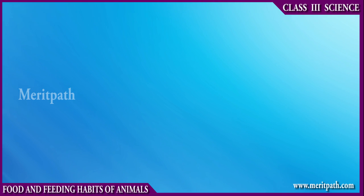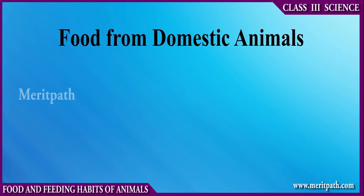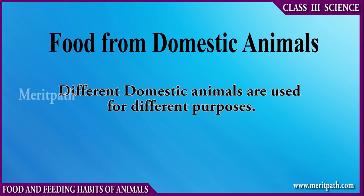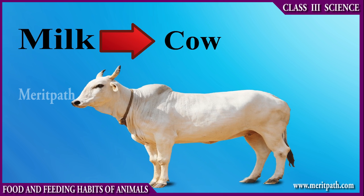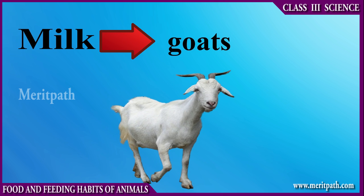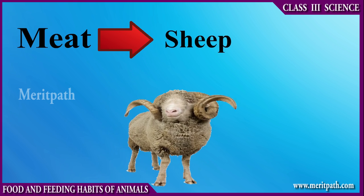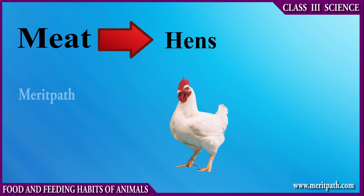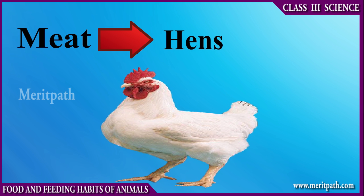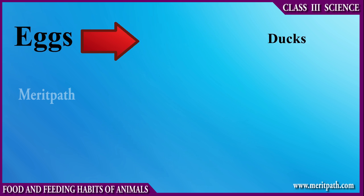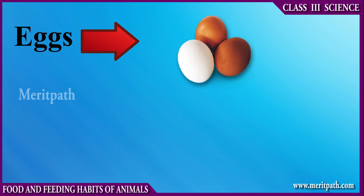Domestic animals: different domestic animals are used for different purposes. Cows, goats, and camels are used for milk, whereas sheep and hens are used for meat. Hens and ducks are used for their eggs.